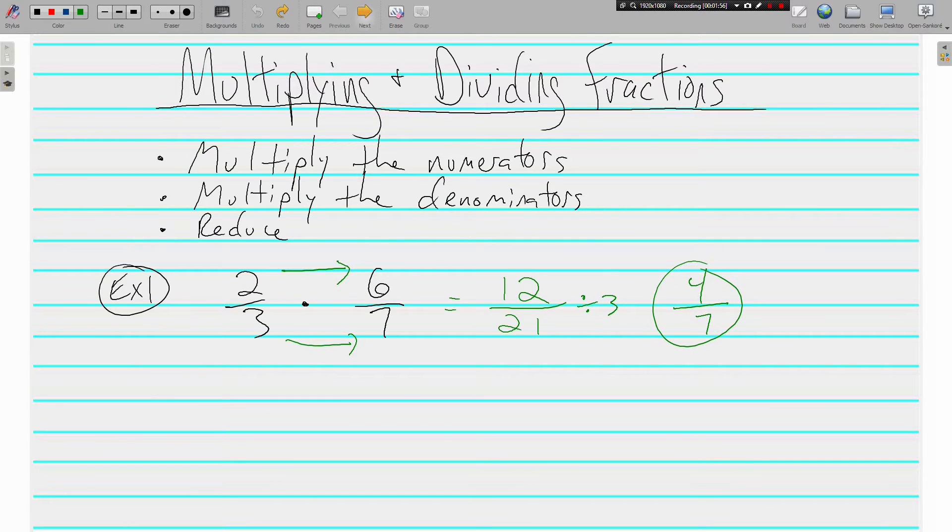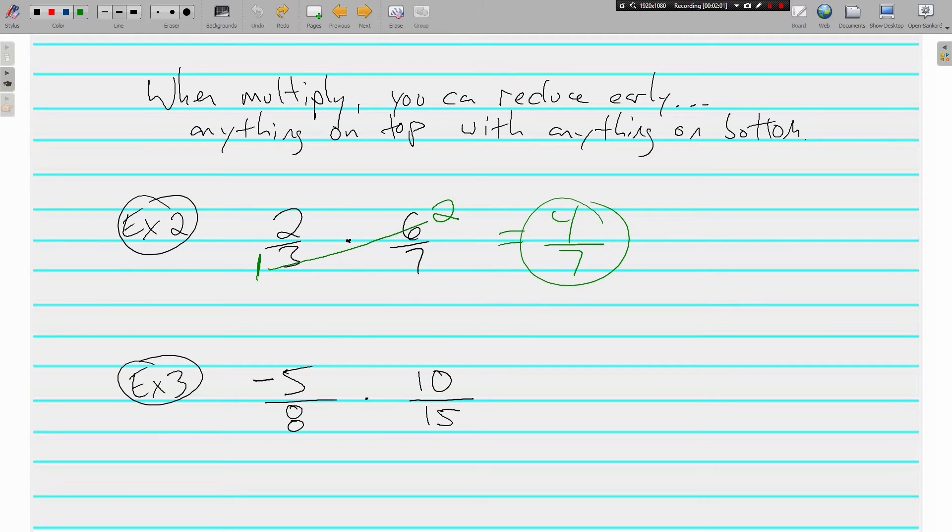One way is just reducing early. I like reducing early because it means you're multiplying smaller numbers and you don't have as big a numbers to reduce at the end. But you can do it any way you like.